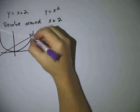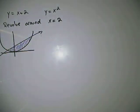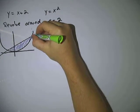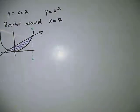So your enclosed region here is this. Now we want to revolve around the line x equals 2 which is actually going to be right here, right where those two functions intersect.